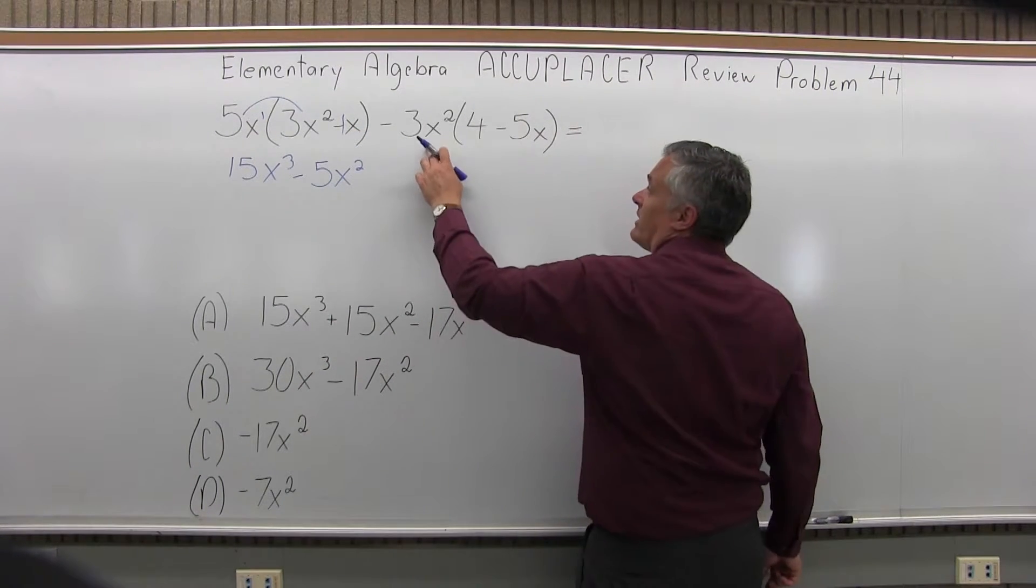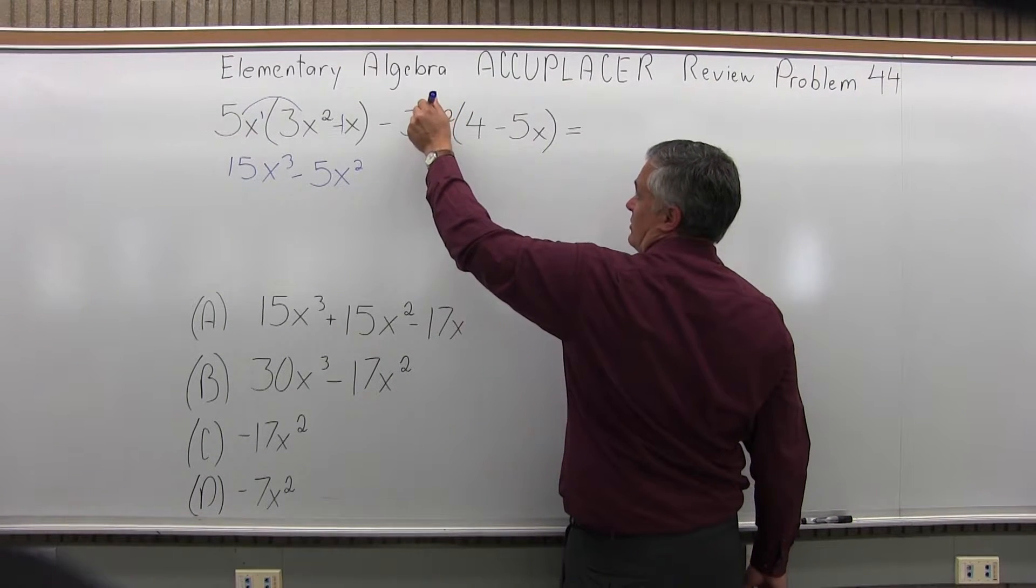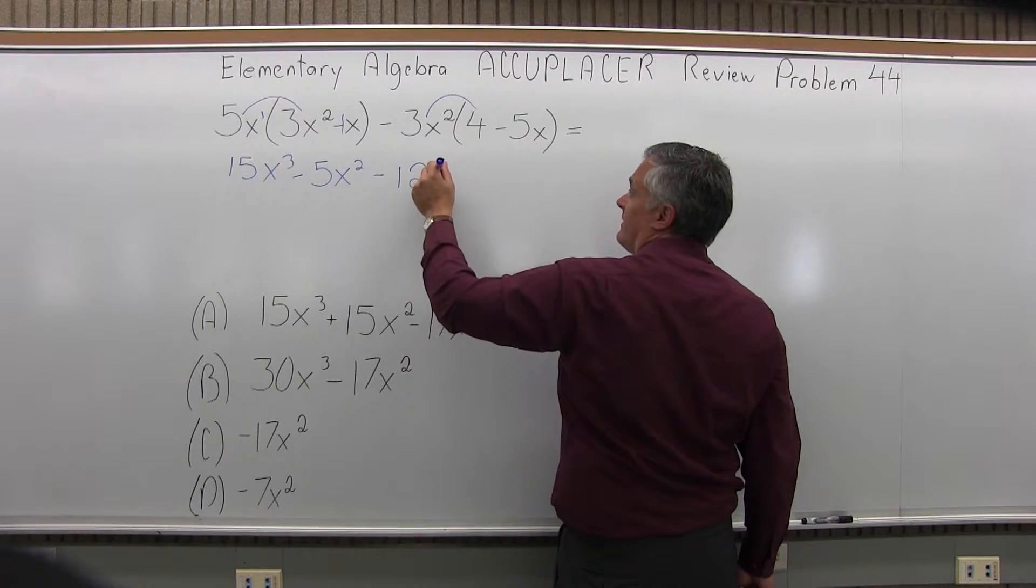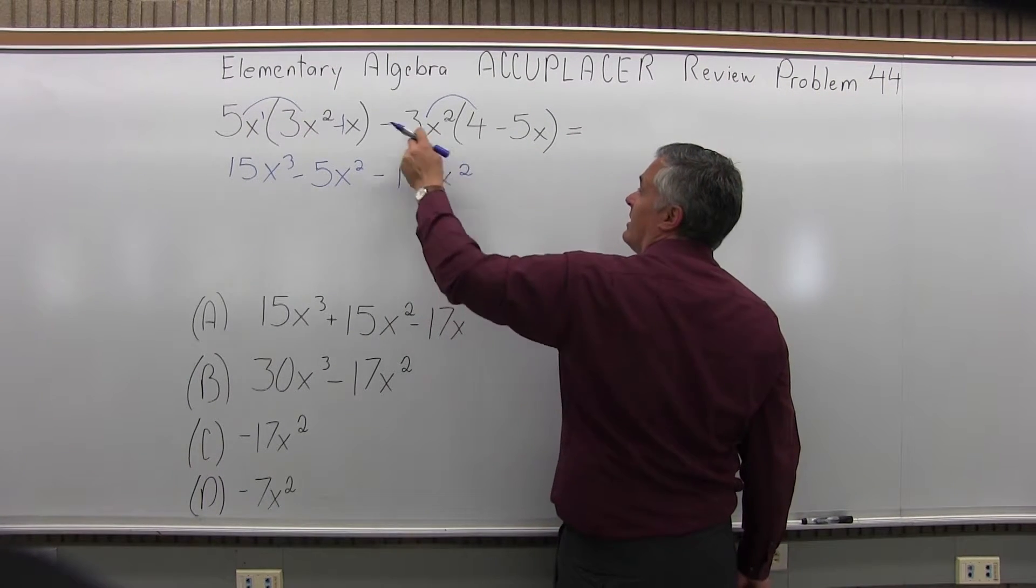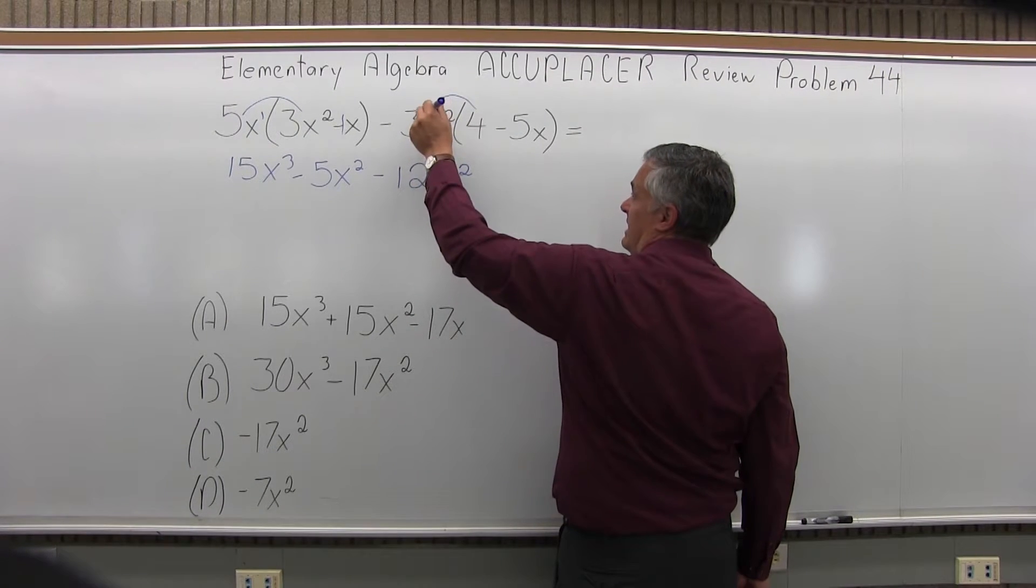Next, I'll look at 3x squared times 4 minus 5x in parentheses. So the 3x squared times the 4 will be minus 12x squared. Again, pay attention to the sign. It's really a minus 3x squared in front of the parentheses.